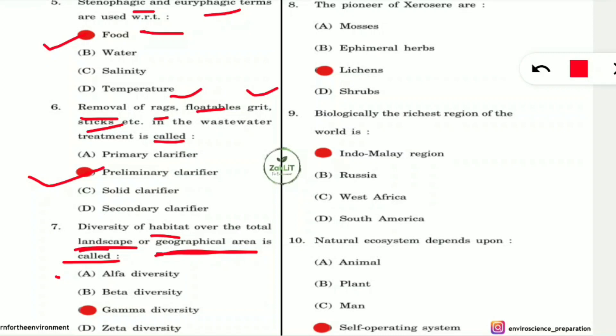Question 8: The pioneer species of xerosere succession are what? Xerosere is a type of succession that takes place in humid sandy areas with less water. The pioneer species — the initial organisms — are lichens.